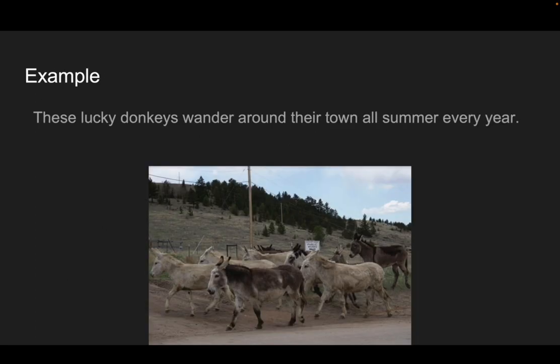Let's practice on an English example. This is a true sentence — these are donkeys wandering around Cripple Creek. They get let out in the summers to roam and they must be very, very happy about that. So: 'These lucky donkeys wander around their town all summer, every year.' Let's see if we can identify the content words or the open class words in this sentence. Those are going to be: lucky, donkeys, wander, town, summer, and year. See if you can figure out what part of speech each of those words is.